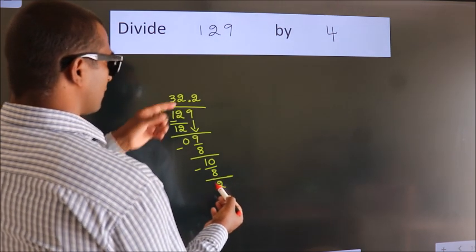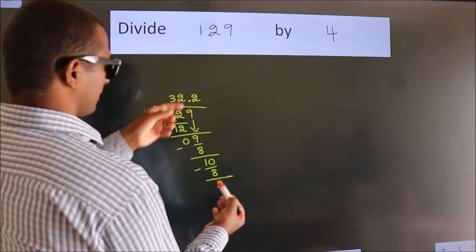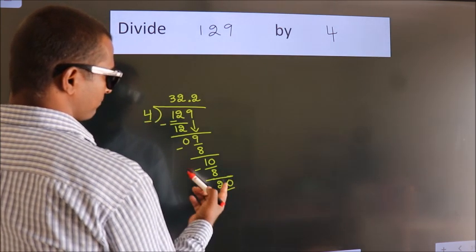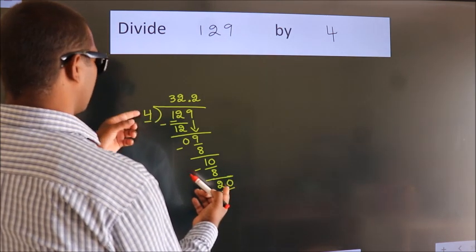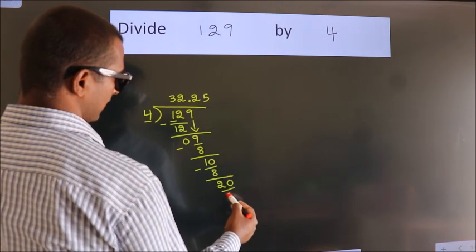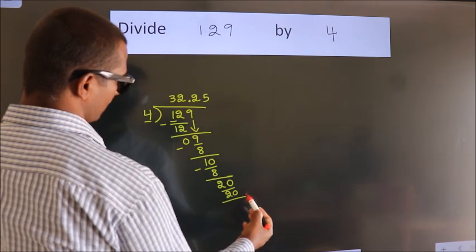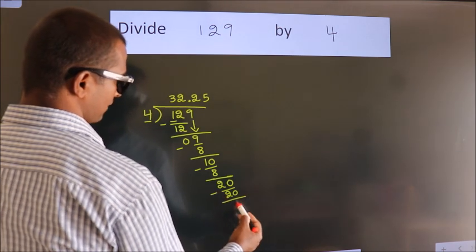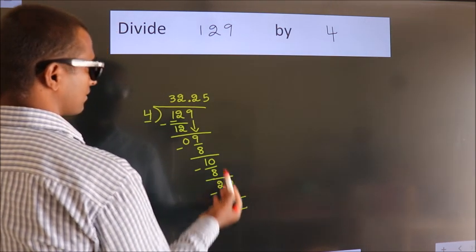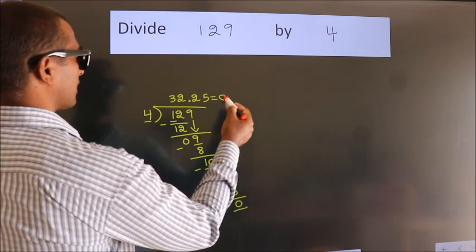After this we already have the decimal, so directly take 0. So 20. When do we get 20 in the 4 table? 4 times 5 is 20. Now we subtract and get 0. We got remainder 0, so this is our quotient.